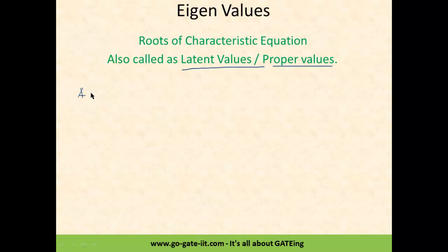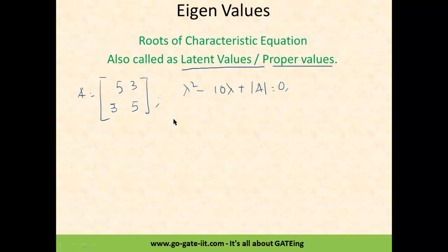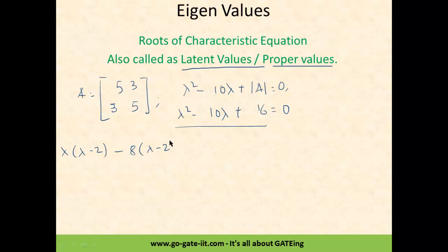Let's calculate the eigenvalues for the matrix [5,3; 3,5]. Following the shortcut formula: lambda squared minus (sum of diagonal elements, which is 10) times lambda plus determinant of A equals 0. The determinant gives 25-9=16, so the equation is lambda squared minus 10 lambda plus 16 equals 0. Factoring: (lambda-2)(lambda-8) equals 0, giving eigenvalues 8 and 2.